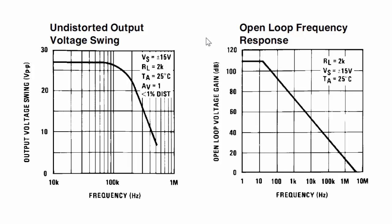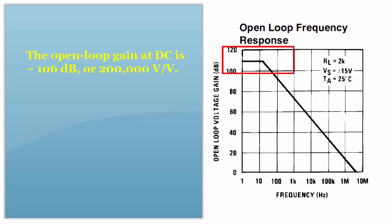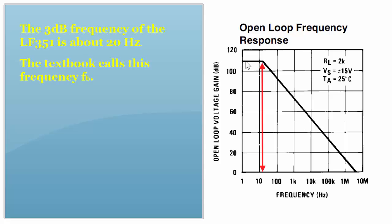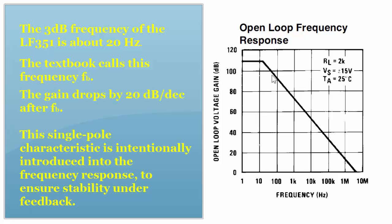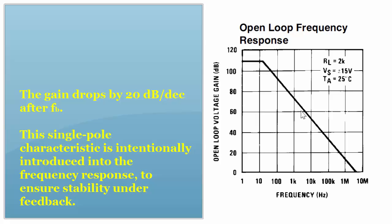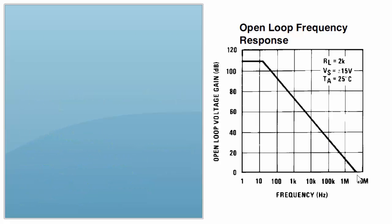You'll notice that the DC gain of the LF351 is on the order of 106 dB, that is 200,000 volts per volt at DC. But the 3 dB frequency of the op amp itself is on the order of 20 hertz. From 20 hertz onwards, the op amp has a single pole characteristic. It drops with 20 dB per decade, and the gain-bandwidth figure of merit of the LF351 is about 4 megahertz.